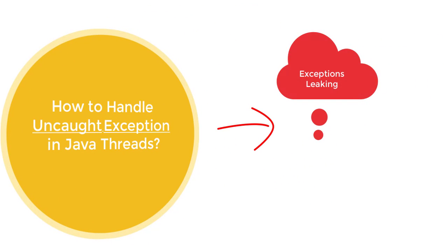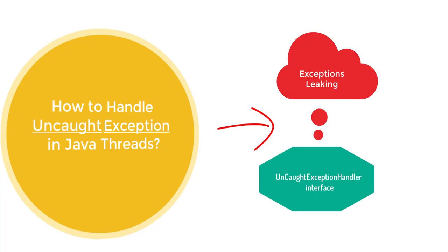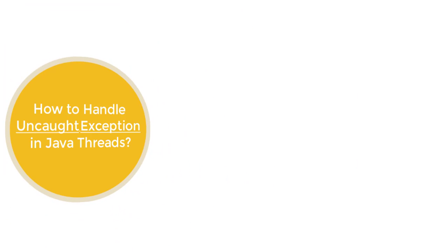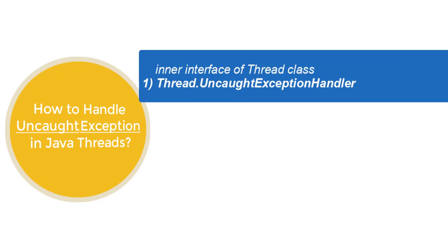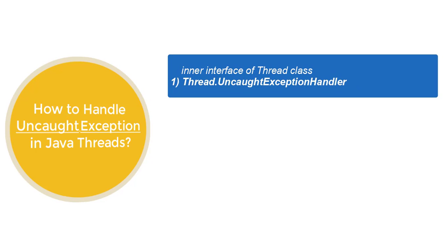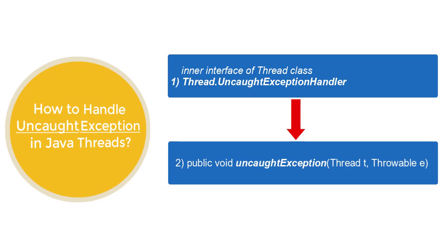So how do we handle uncaught exceptions in Java threads? When there is an exception leaking from a Java thread, we can handle it by using the inner interface of the Thread class called UncaughtExceptionHandler. To handle uncaught exceptions we need to write an exception handler that implements Thread.UncaughtExceptionHandler and also override its only method, uncaughtException, which accepts two arguments: a Thread object and a Throwable. The Throwable helps us identify the exception that occurred in our thread.